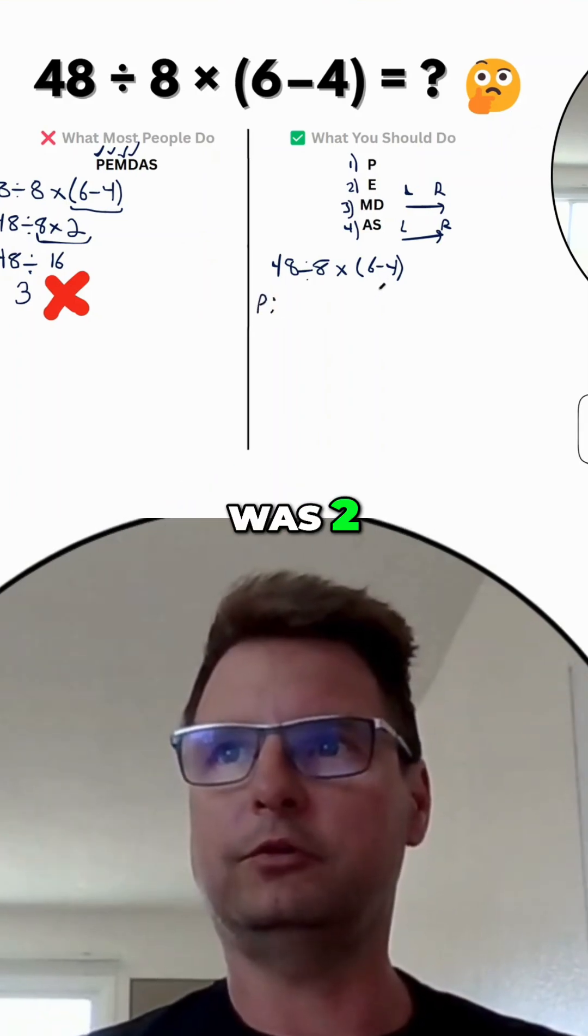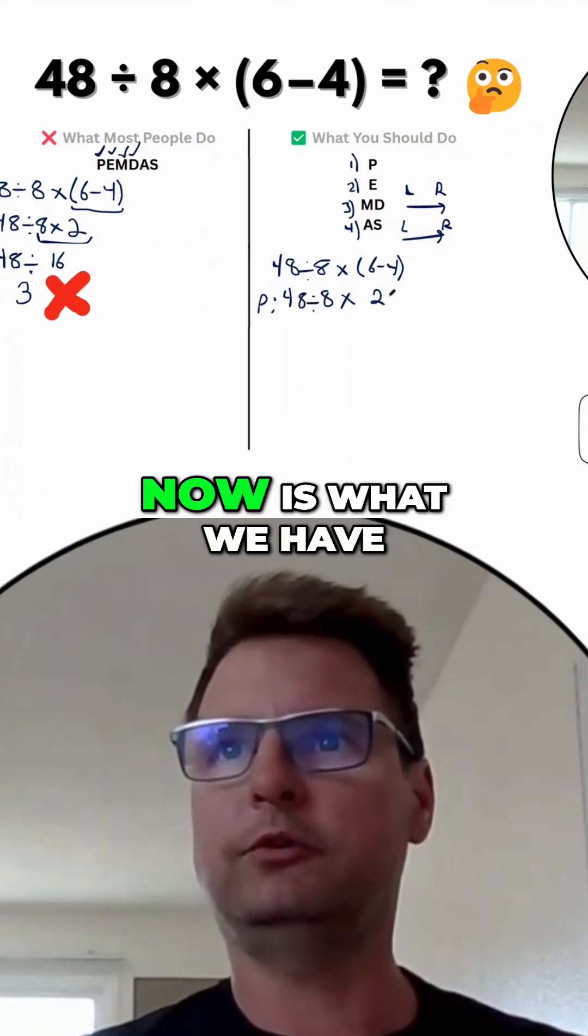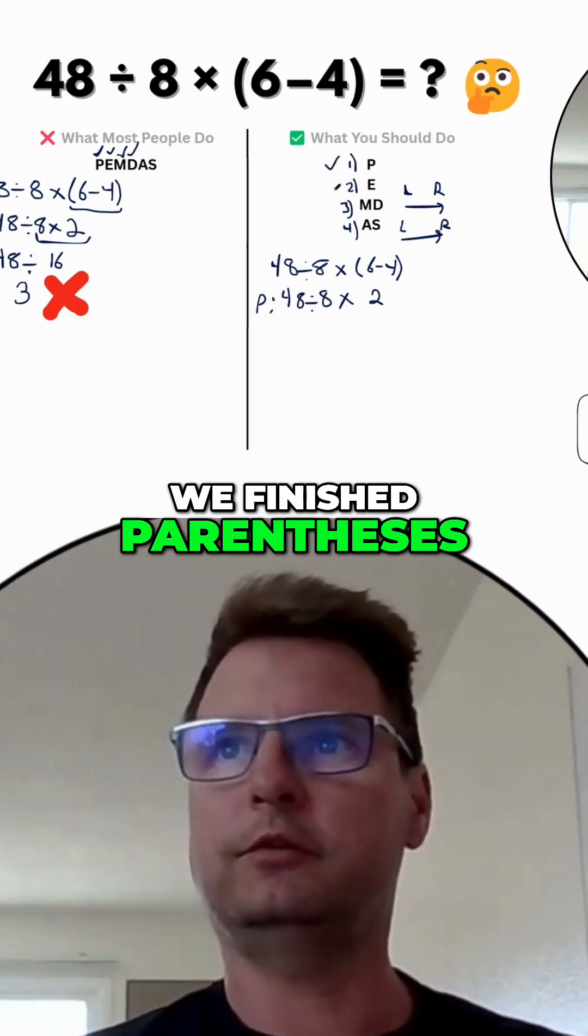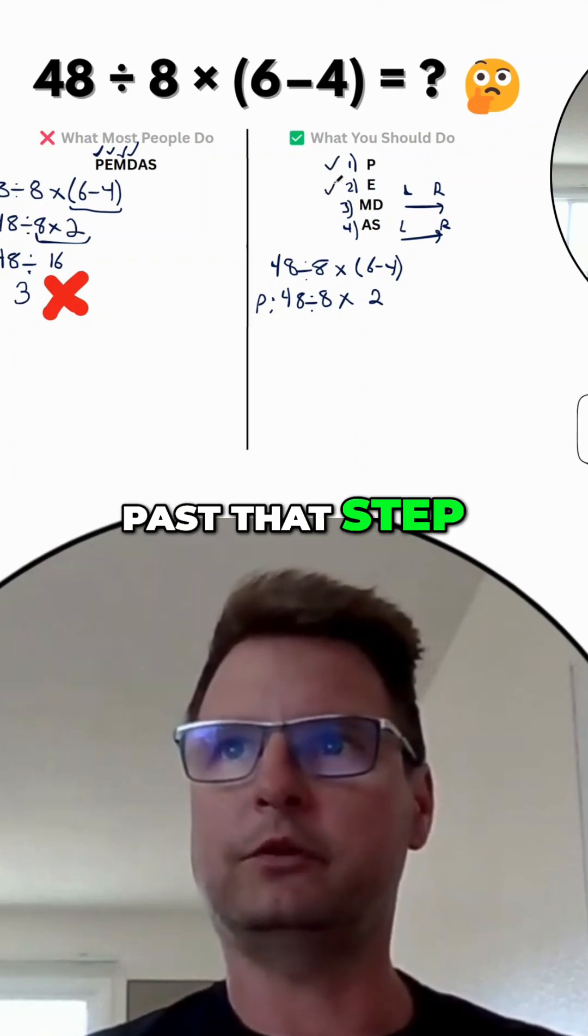So that six minus four was two. The 48 divided by 8, bring down the other stuff, right? Times two. And that's what we have finished parentheses. Exponents again, we don't have any of those in there, so we can move past that step.